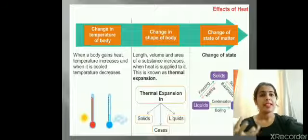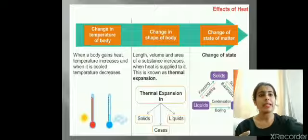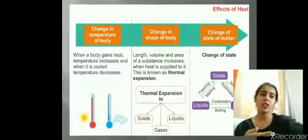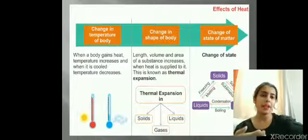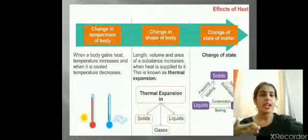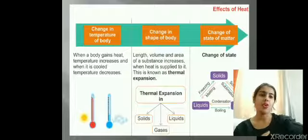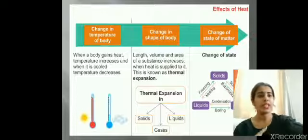In some cases, it can also cause a change in the shape of the body. Like if I start melting ice, ice is solid. If I am supplying heat to ice cubes, it will convert it into liquid. Length, volume, and area of a substance will increase when heat is supplied to it, and this is what we call thermal expansion.